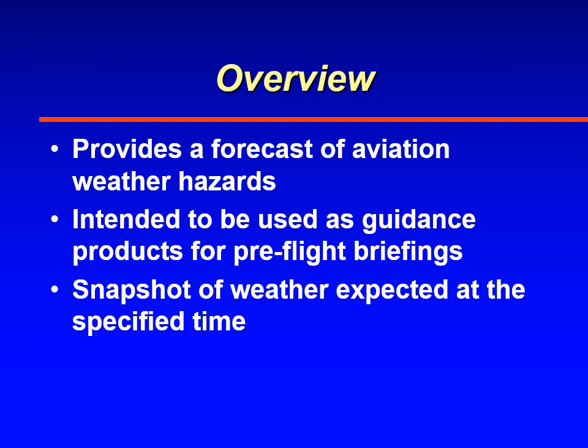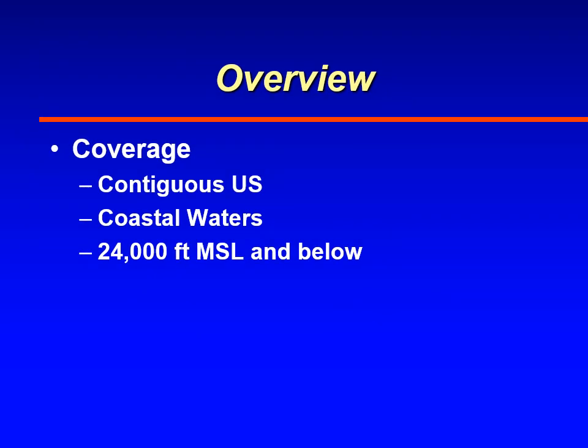The Low-Level Significant Weather Prognostic Chart provides a forecast of aviation weather hazards — weather hazards such as turbulence, icing, and IFR weather. It's intended for pilots to be used in a pre-flight briefing to anticipate weather hazards, and it provides a snapshot of weather conditions at some specific time into the future. The chart covers the contiguous United States and its coastal waters, and it forecasts hazardous weather from the surface up to 24,000 feet.